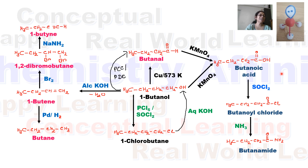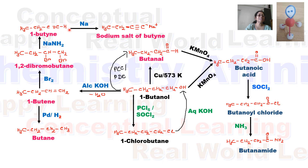In a terminal alkyne, the terminal hydrogen is acidic in nature. That's why in the presence of sodium, we get the sodium salt of 1-butyne along with hydrogen gas.